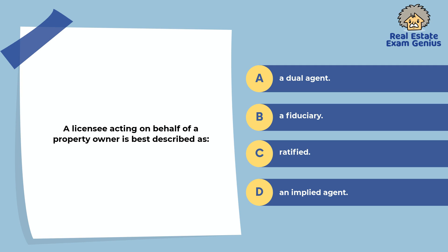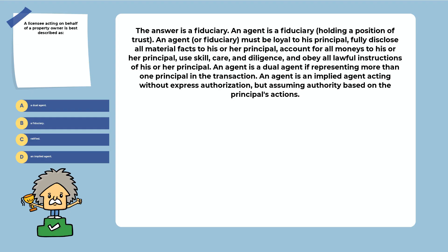A licensee acting on behalf of a property owner is best described as: a dual agent, a fiduciary, ratified, or an implied agent. The answer is a fiduciary. An agent must be loyal to his principal, fully disclose all material facts, account for all money, use skill, care, and diligence, and obey all lawful instructions of his or her principal. A dual agent represents more than one principal. An implied agent acts without express authorization but assumes authority based on the principal's actions.